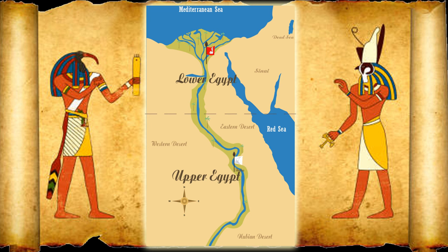Instead, they are derived from how the Nile River flows. When we talk about rivers, 'up' is upstream, nearer to the source, and 'down' is downstream, farther from the source. The Nile flows from south to north, so Upper Egypt and Lower Egypt were named because they were on the Upper and Lower Nile respectively.